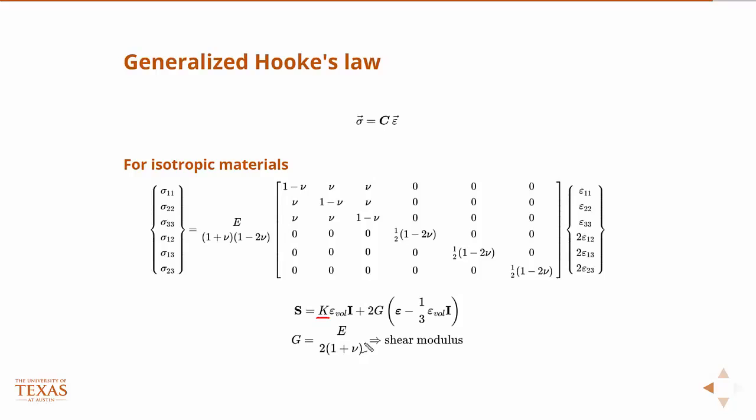The diagonal component of the stress tensor. So then if you multiply that by the identity matrix, and then add that to two mu, or two G, G is the shear modulus, times the full strain tensor minus the volumetric strain, or the average of the volumetric strain.